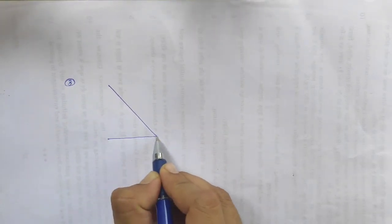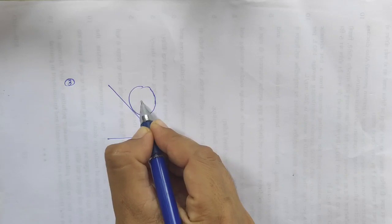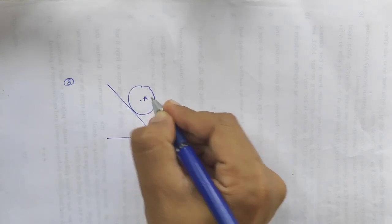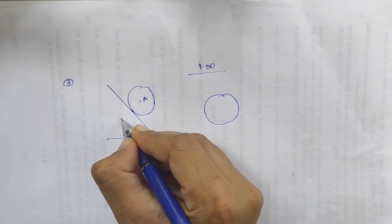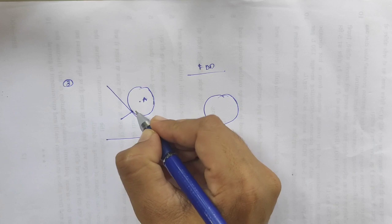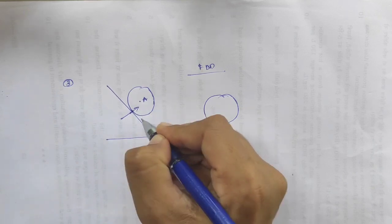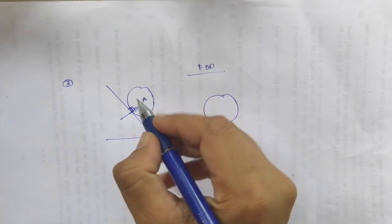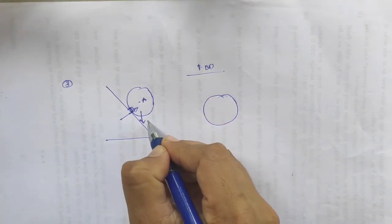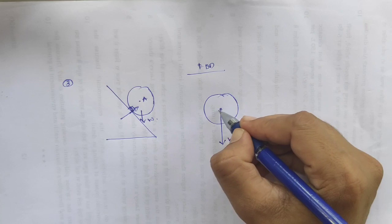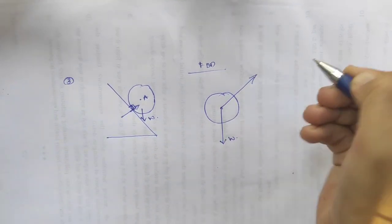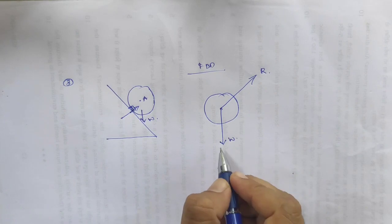One more example. In this case there is an inclined surface, and the body is resting on the inclined surface. To draw the free body diagram, we have to consider there will be one support from the surface on which the body rests, in the inclined direction but perpendicular to the surface. And one more force — weight — will be acting in the downward direction. So we can draw: one weight towards the downward direction, and there will be one reaction from the surface in this direction. This is the free body diagram for this example.